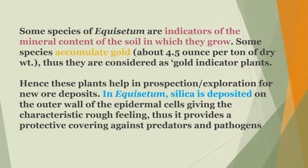Some species of Equisetum are indicators of the mineral content of the soil. Some species also accumulate gold — about 4.5 ounces per tonne of dry weight — and are thus considered gold indicator plants, helping in prospection for new gold deposits. Silica is deposited on the outer wall of the epidermal cells, giving a characteristic rough feeling and providing protective covering against predators and pathogens.